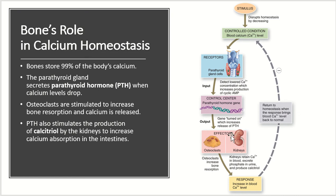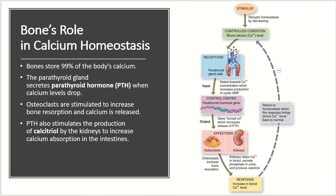This triggers the effector cells — the osteoclasts and the kidneys. The osteoclasts increase bone resorption, carving out more bone so that more calcium can circulate. The kidneys retain calcium in the blood, excrete phosphate in the urine, and produce calcitriol. All of these lead to an increase in blood calcium levels. Once calcium levels have returned to homeostasis, the response ends and we no longer need to produce parathyroid hormone.